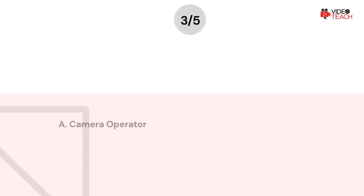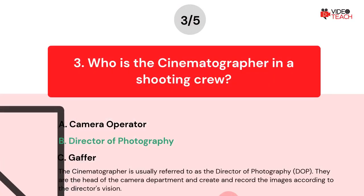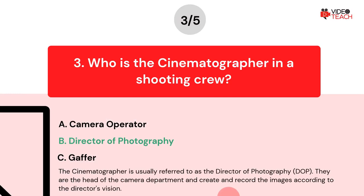The correct answer is B. The cinematographer is usually referred to as the director of photography, or DOP for short. They are the head of the camera department and create and record the images according to the director's vision.